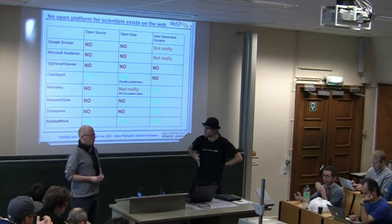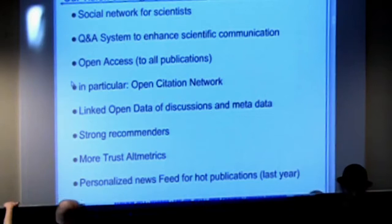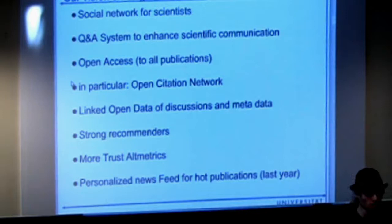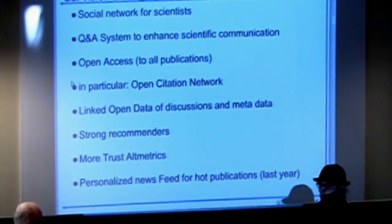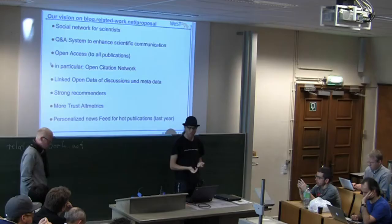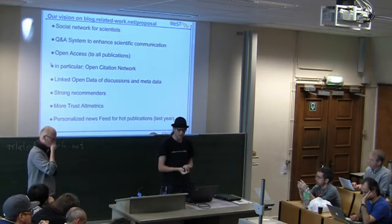We have a proposal at blog.relatedwork.net/proposal where we talk to a lot of scientists. What we want to create is a social network for scientists. It should consist of a Q&A system — we see in Stack Overflow and MathOverflow that a lot of fruitful discussions happen there. We want open access to all the data, make use of the open citation network for stronger recommendations, have linked open data, and discussions and metadata we generate — not just PDFs but also the content on our website.